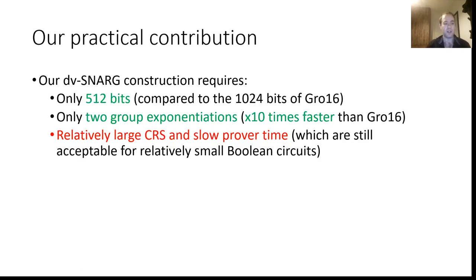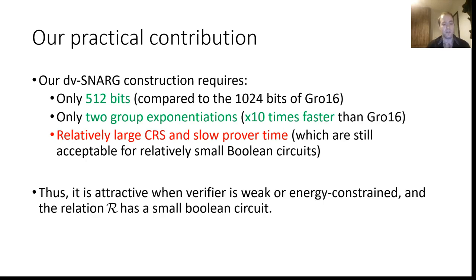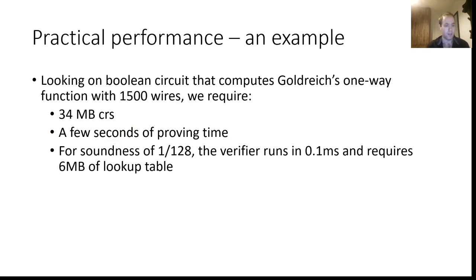In the practical frontier, our designated verifier SNARG requires only 512 bits compared to the 1,024 bits of Gros 16, and requires only two group exponentiations — 10 times faster than Gros 16. However, it does require a relatively large common reference string and slow prover time, which is still acceptable for relatively small Boolean circuits. For example, for a Boolean circuit computing a Goldberg one-way function — which as shown by Bartusek et al. can be done with 1,500 wires — we require 34 megabytes of common reference string, only a few seconds of proving time, and for soundness of 1/128 the verifier runs in one-tenth of a millisecond and requires 6 megabytes of lookup table.